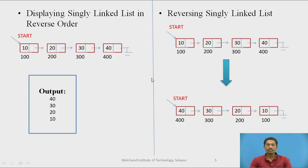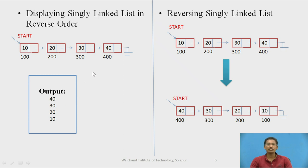There are two concepts in the case of a singly linked list. The first is displaying a singly linked list in reverse order. Suppose the list contains four nodes: 10, 20, 30, 40. After executing this function, the output will be 40, 30, 20, and 10. In this case, you are just printing the singly linked list in reverse direction, and the list itself will remain as it is.